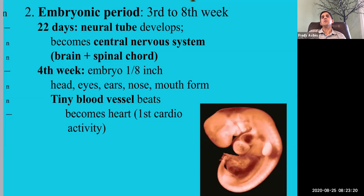By the fourth week, the embryo is about an eighth of an inch. Interestingly, the head, eyes, ears, and nose are already beginning to form. More notably, a tiny blood vessel begins to beat — this is the first sign of cardiovascular activity, and it will later become the heart. At only four weeks, once you have a pulse — no matter how tiny — there is life. Before that, it was just a mass of dividing cells.